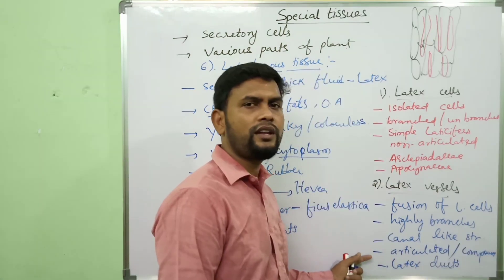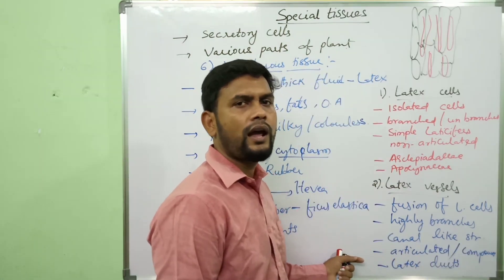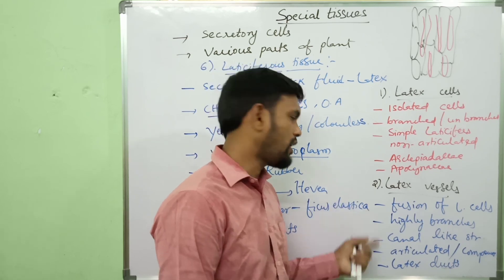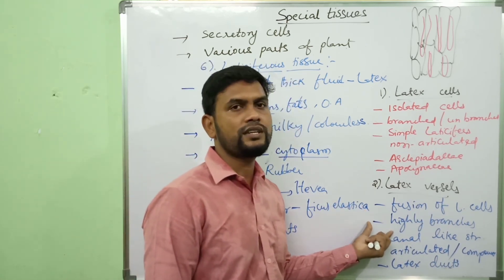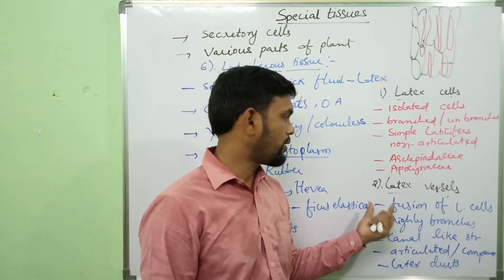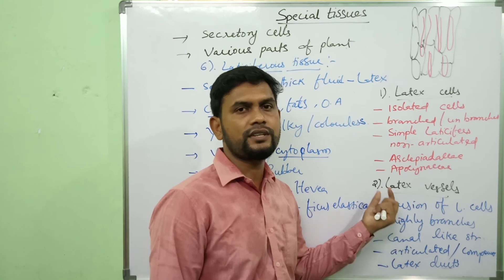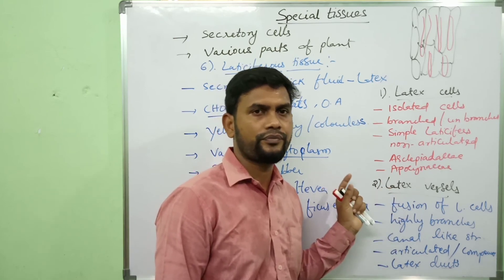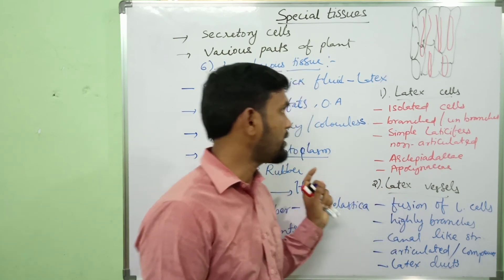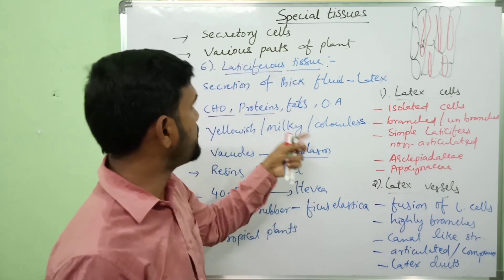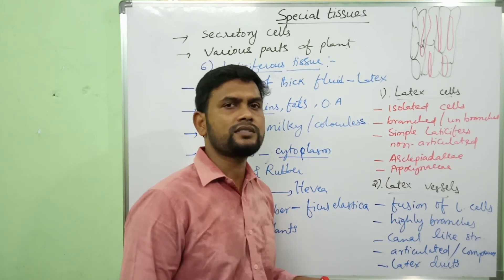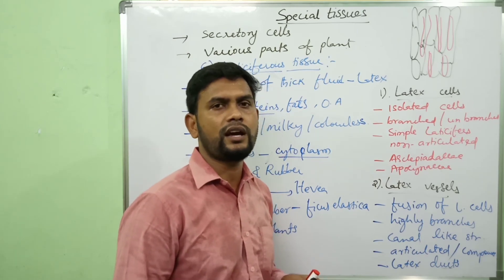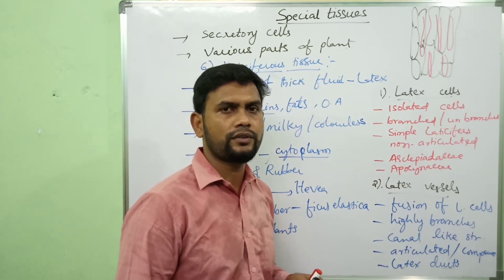Latex vessels are mainly found in Asteraceae, Apocynaceae, Moraceae, Papaveraceae, etc. This is about special tissues. In the next class, I will come with another topic. Thank you.